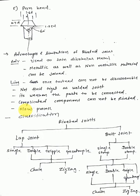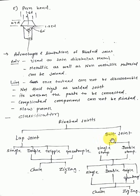Now the classification: the riveted joint is divided into two types — lap joint and butt joint. The lap joint can be single, double, triple, or quadruple, and we also have chain and zigzag types.